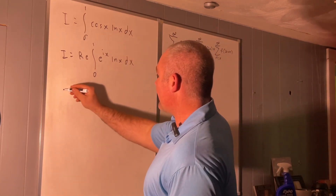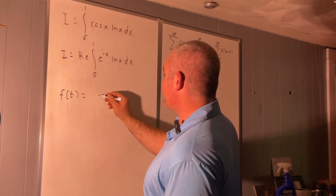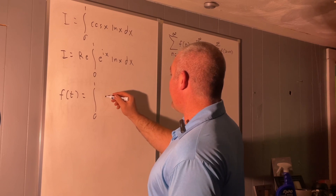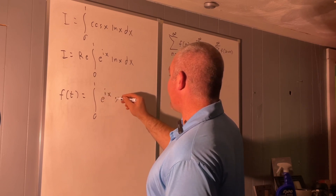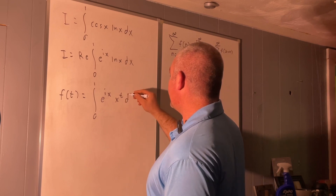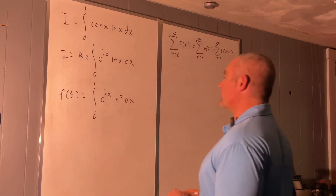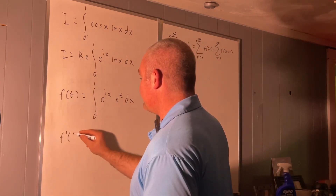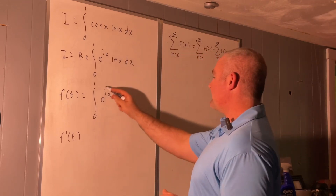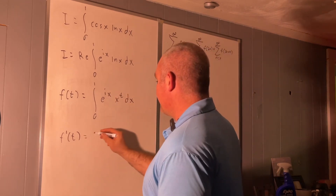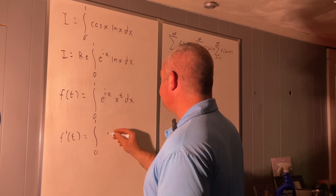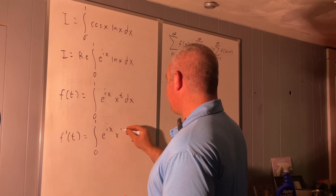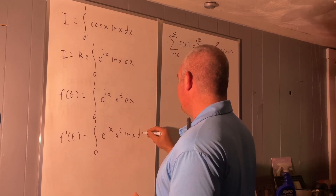Let's create a function of t that's equal to the integral from 0 to 1 of e to the ix times x to the t dx. Using the Leibniz rule for differentiation under the integral sign, we can obtain f prime of t by taking a partial with respect to t of the integrand. This will be the integral from 0 to 1 of e to the ix times x to the t times natural log x dx.